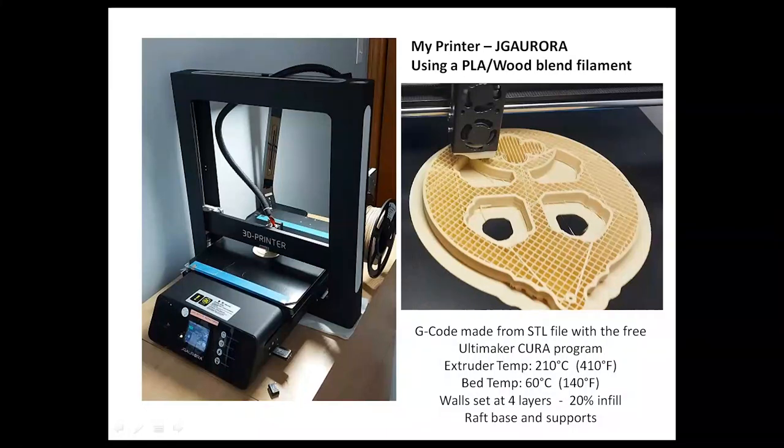I used the PLA and wood blended filament because it's easily sanded. The PLA part is a cornstarch product that is fully biodegradable. My complete material cost was about 3 pounds and 31 pence and weighs 173 grams or about one-third of a pound.